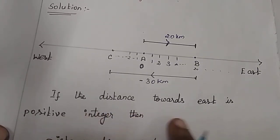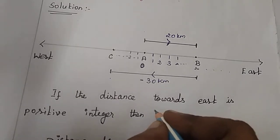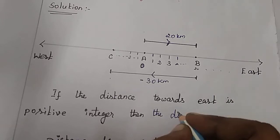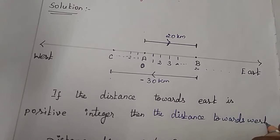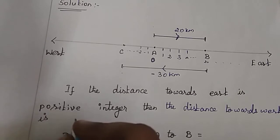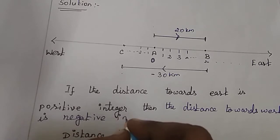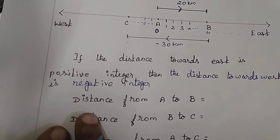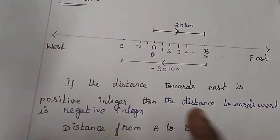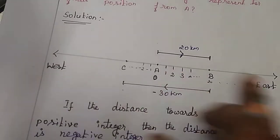So the question and answer is: if the distance towards east is a positive integer, then the distance towards west is a negative integer. Distance from A to B is plus 20 kilometers, because it is a positive integer.